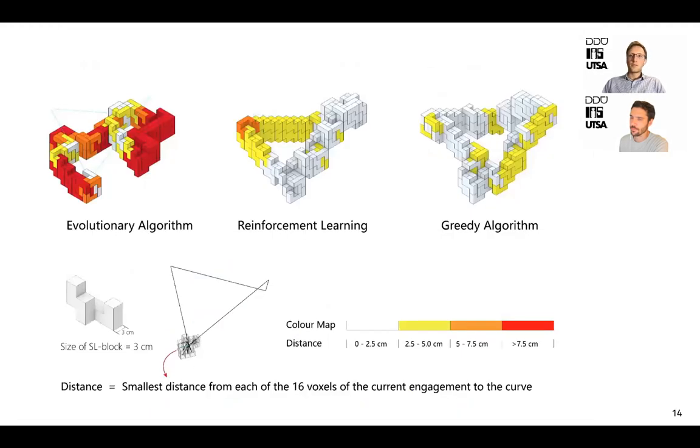Looking closer at the results on a closed 3D curve, we see that reinforcement learning is able to match the target shape much better than the evolutionary algorithm, coming close to the almost optimal performance of the greedy algorithm. Here, the color shows how close the blocks match the desired shape.